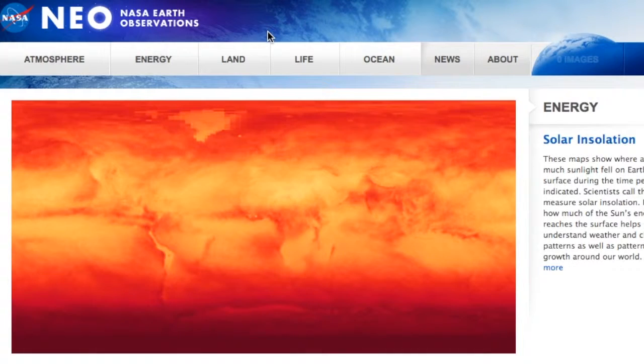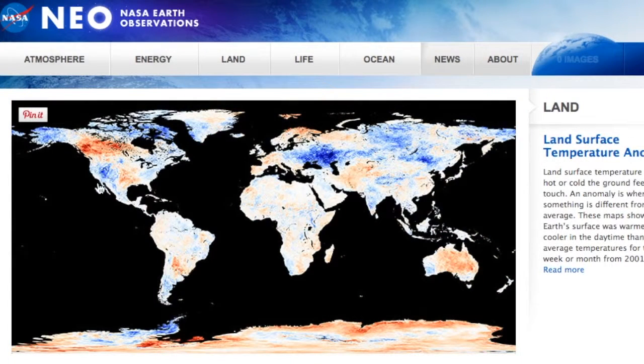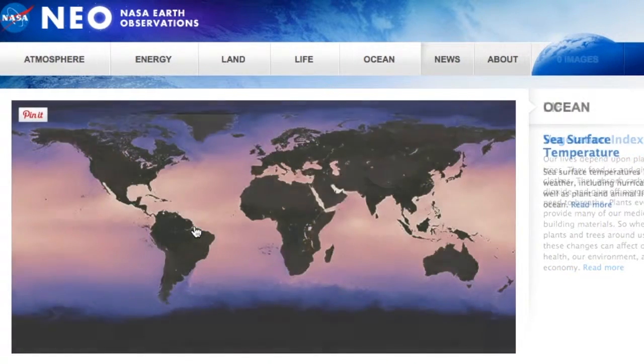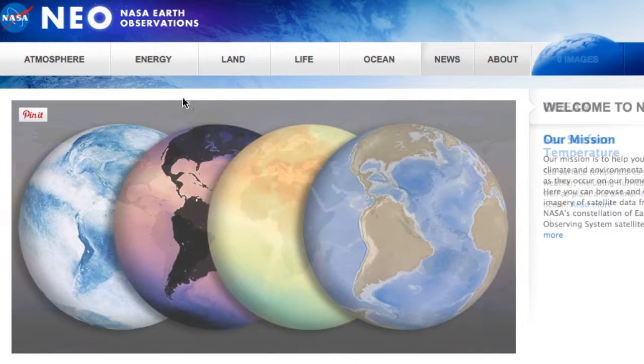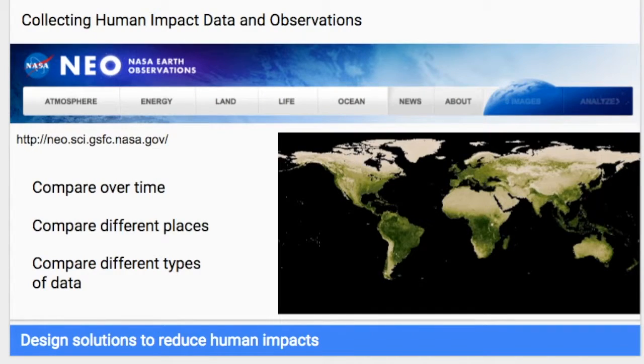We're going to be using a website called the NASA Earth Observations to collect some human impact data and make some observations. If you go to this website, you'll be able to see that there is a lot of information in various pictures that we're going to be using. We're going to use those pictures to collect data. You guys are going to be making your own questions and investigating that based on the information in this website. So you can choose lots of different ways that you can compare things. You can compare different places on earth, different times, or even different types of data, whether it's from energy to land in different areas, in order to come to some sort of conclusion about the impacts of humans.